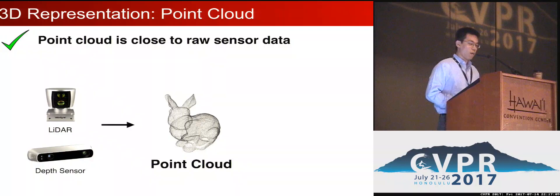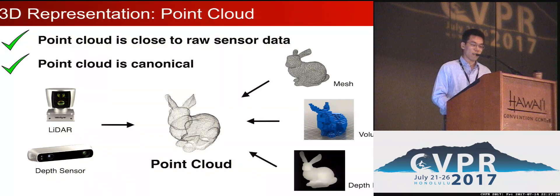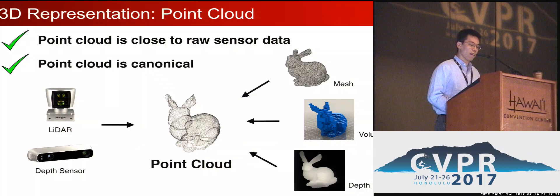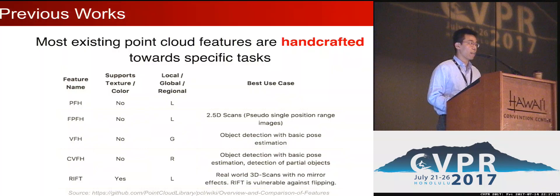Here is a list of just a few of them. Among those 3D representations, this work cares most about point cloud. Point cloud is probably the closest 3D representation to raw sensor data. It's also in a canonical form, meaning that we can easily convert other 3D representations to point cloud or convert point cloud to others. However, there is barely any work on point cloud feature learning. Most existing point cloud features are handcrafted towards specific tasks, as listed in the table here.